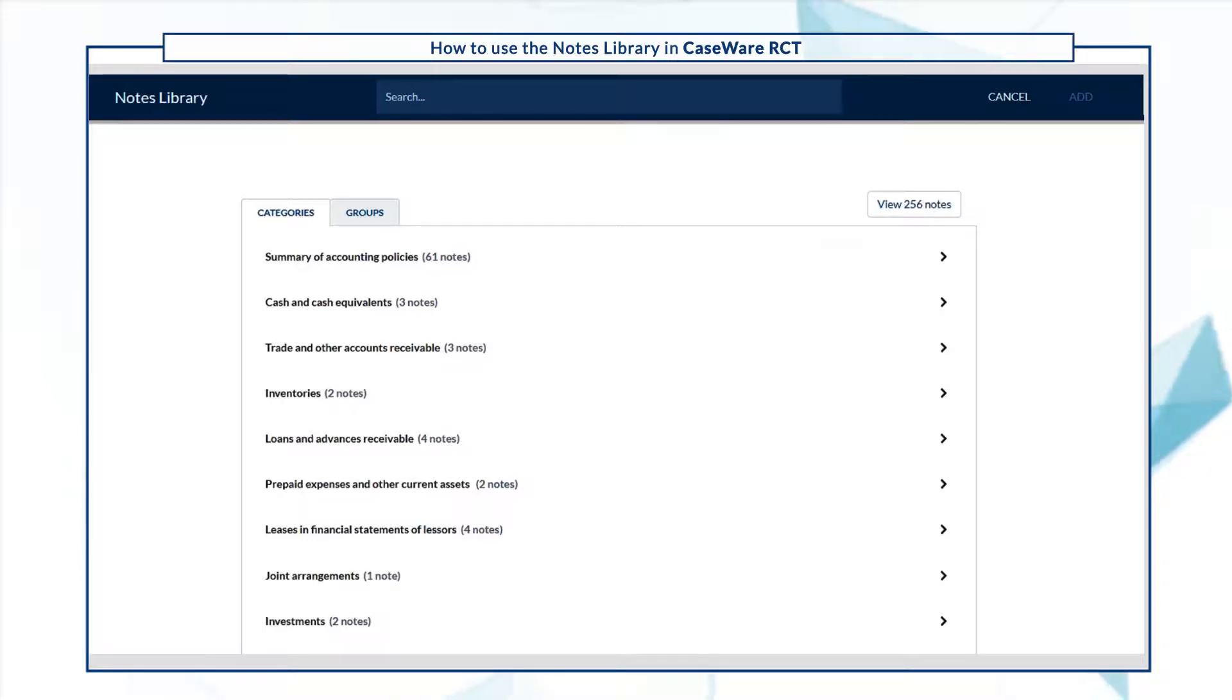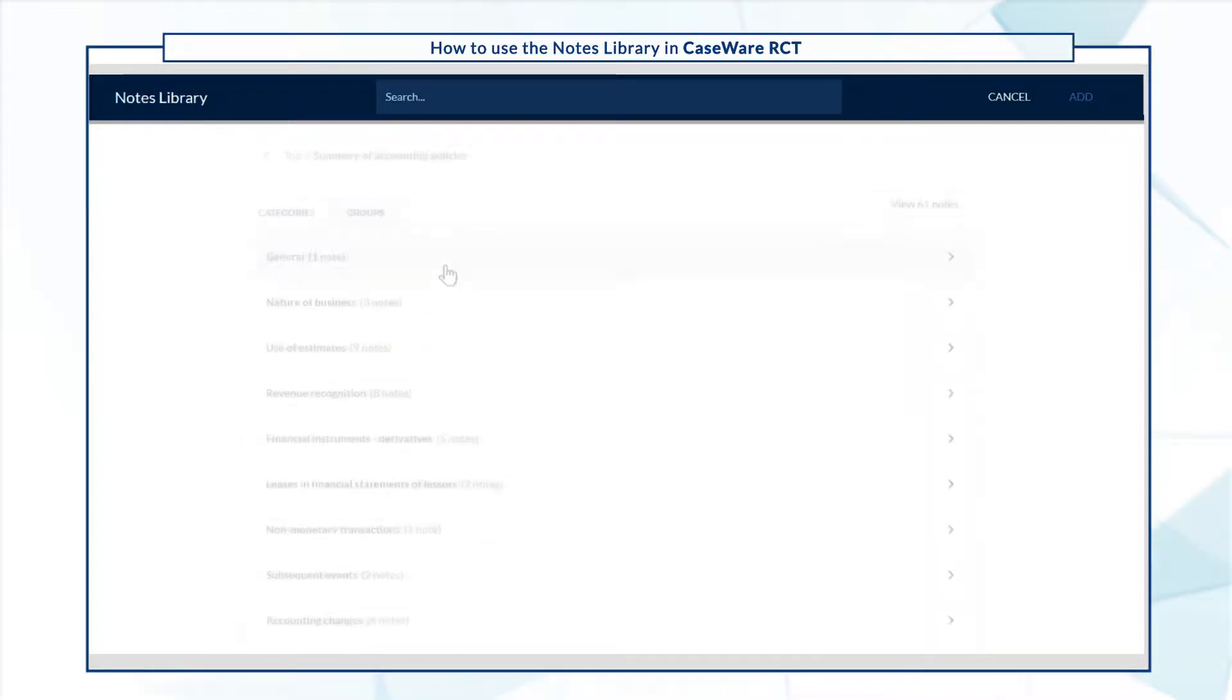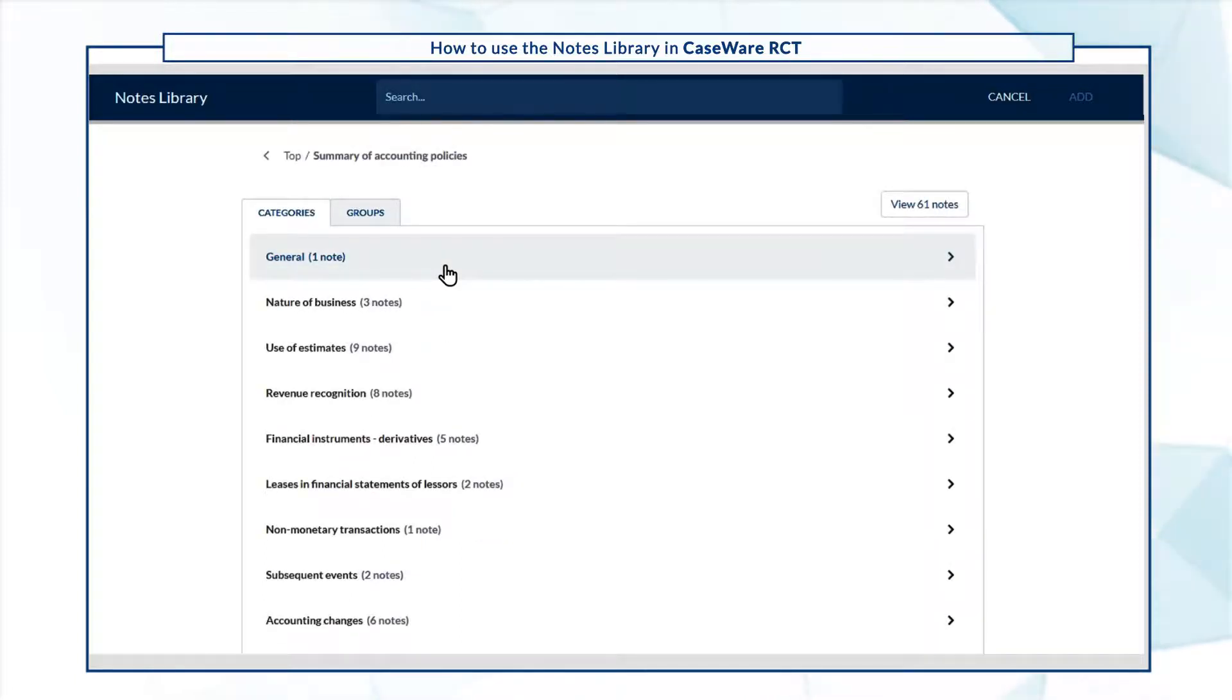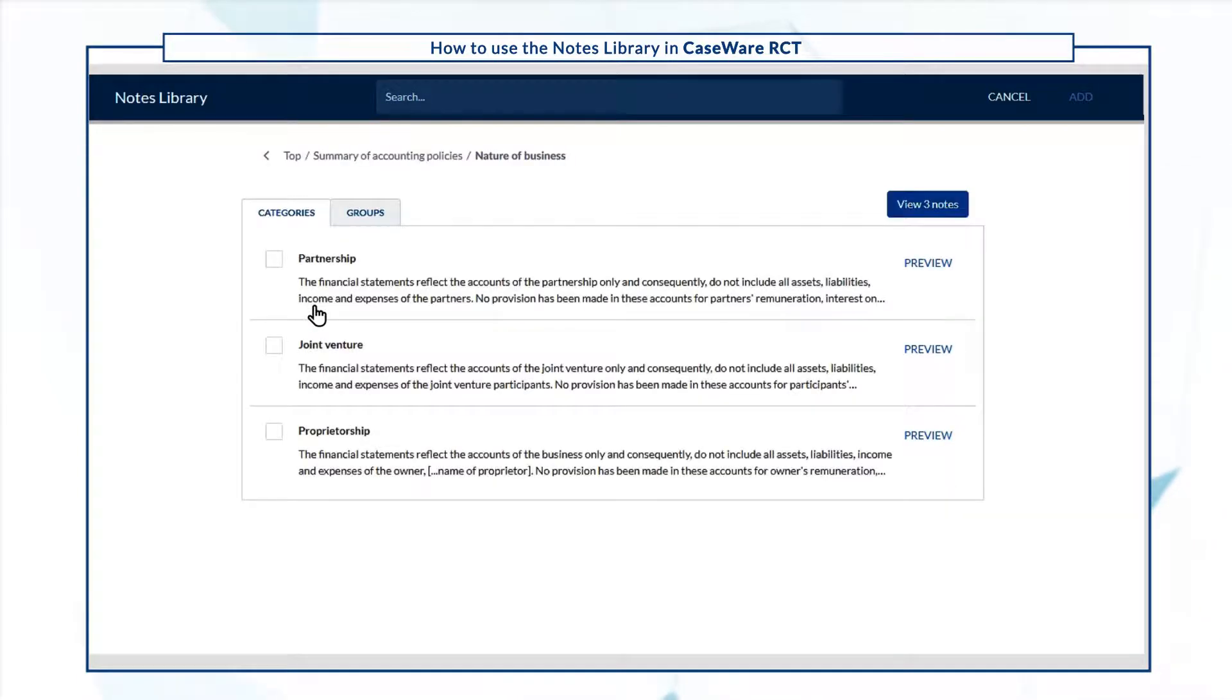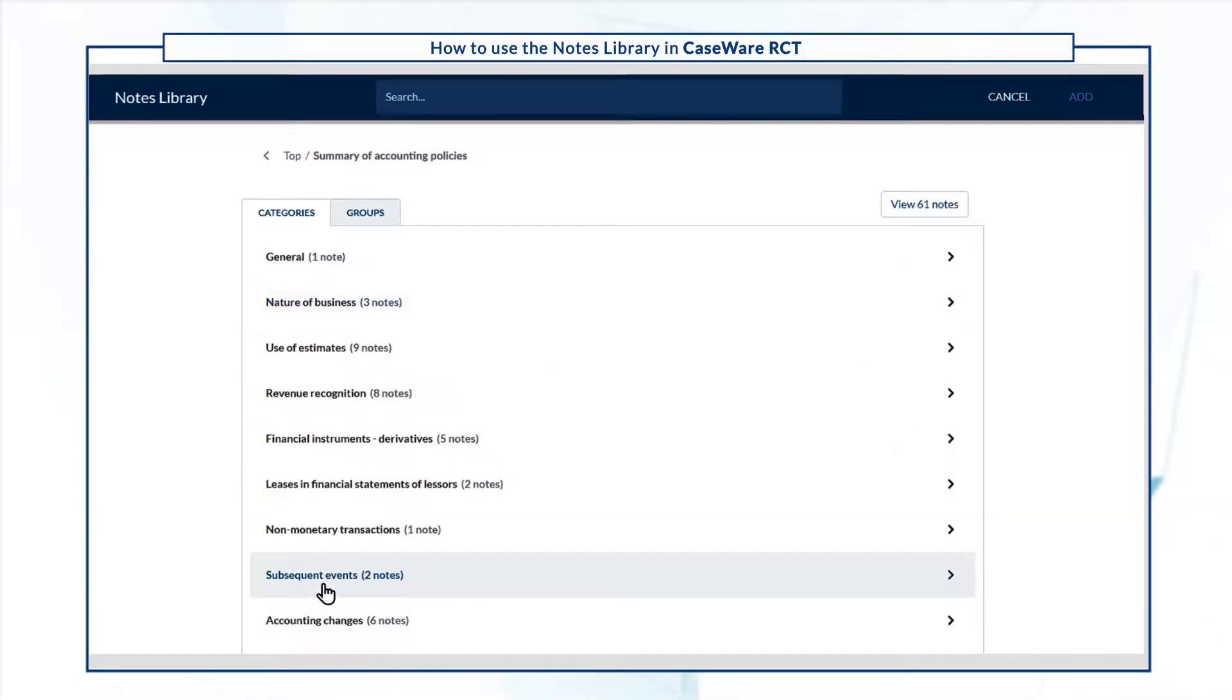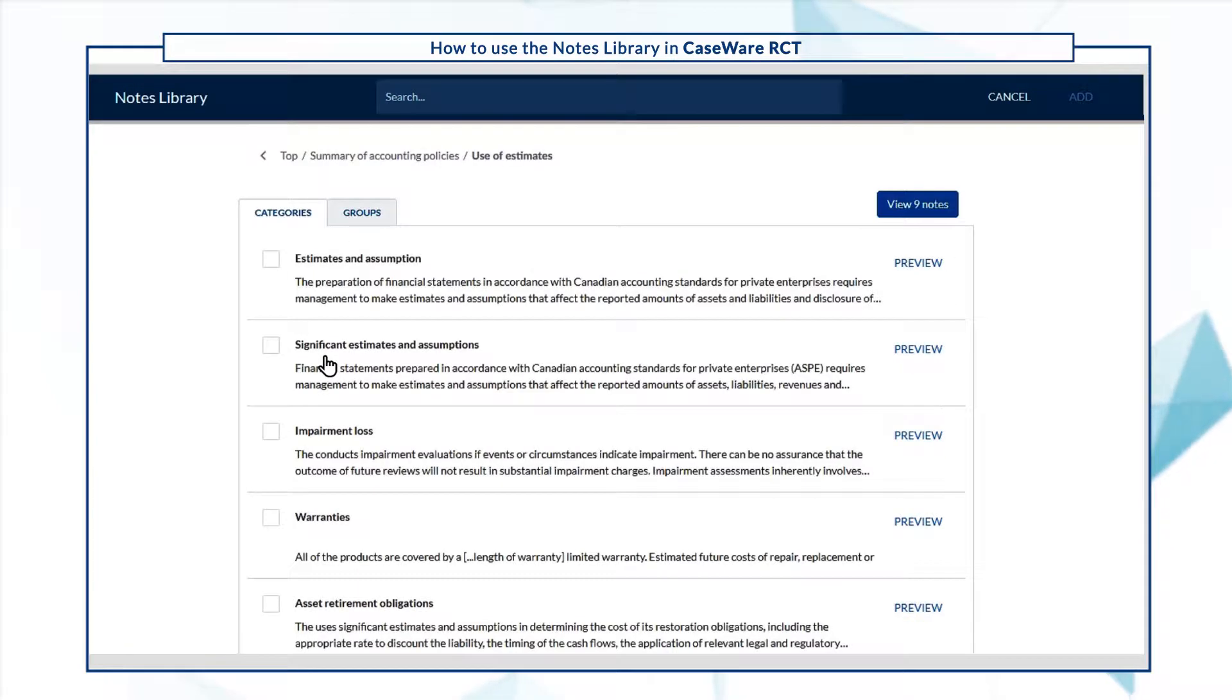Let's take a look at the Summary of Accounting Policies. There are 61 notes in this category that are further subdivided into categories such as Nature of Business, Subsequent Events, Use of Estimates, and more.